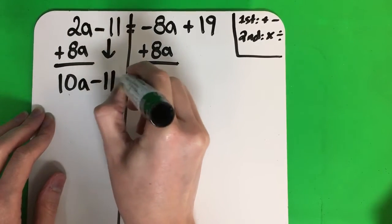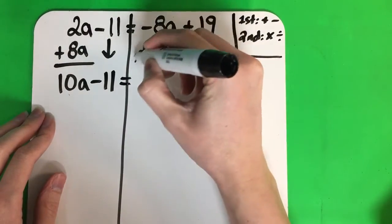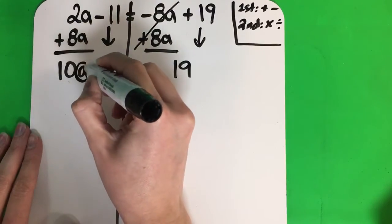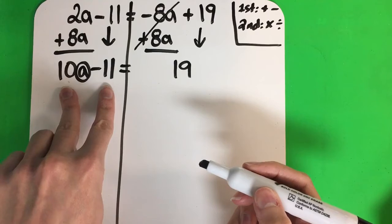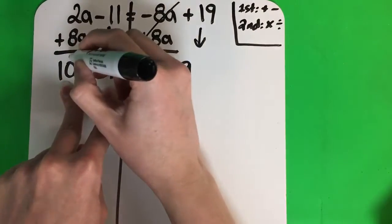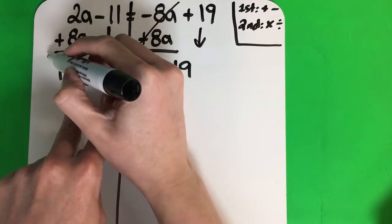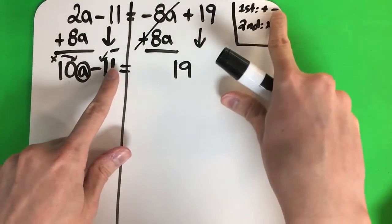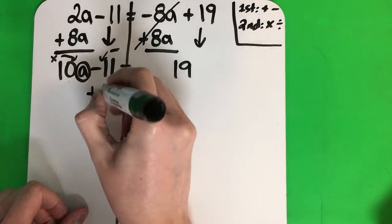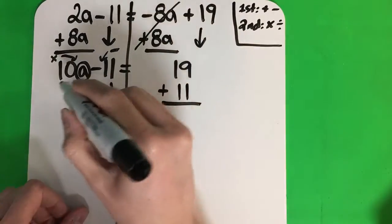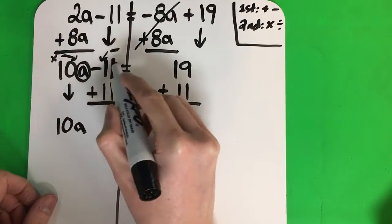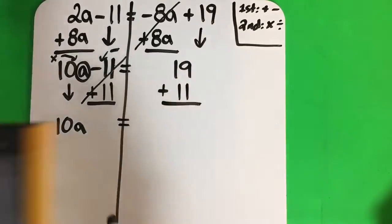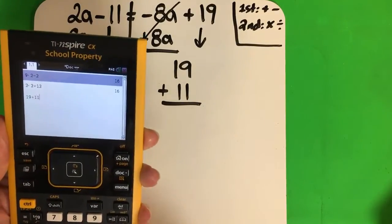Copy. Minus 11 equals. Negative 8 plus 8 cancels — it's 0. Copy down 19. My goal is I want A alone. A is on the left, so I need to move the two numbers on the left: 10 and negative 11. In the middle — nothing — multiply. And this one is negative. Which one first, times or minus? Minus. The opposite — plus 11. Copy plus 11. Copy down 10A. Negative 11 plus 11 is 0 — cancel. Equals 19 plus 11. Let's check that in the calculator: 19 plus 11. Enter. 30.